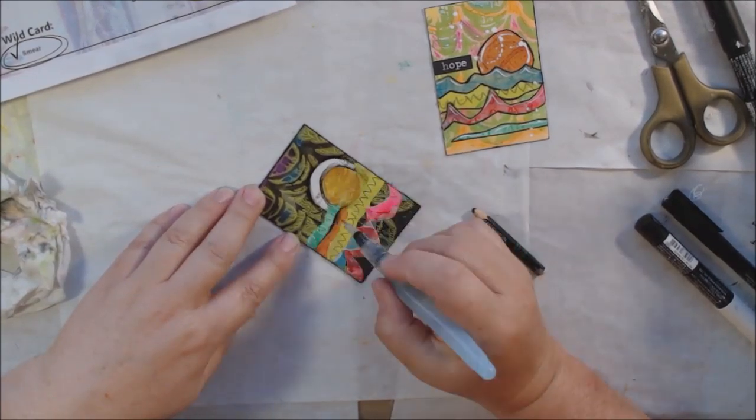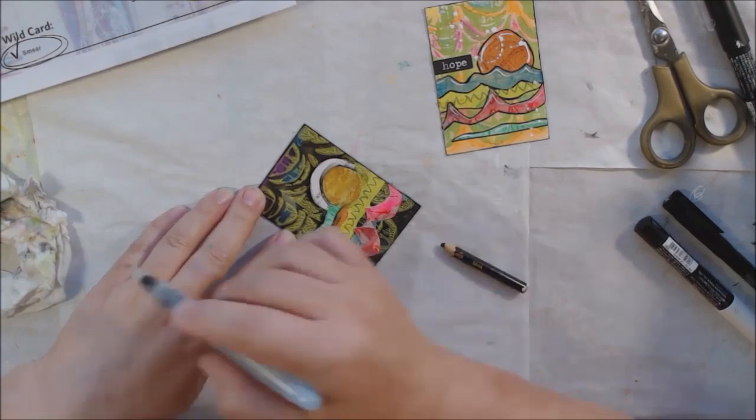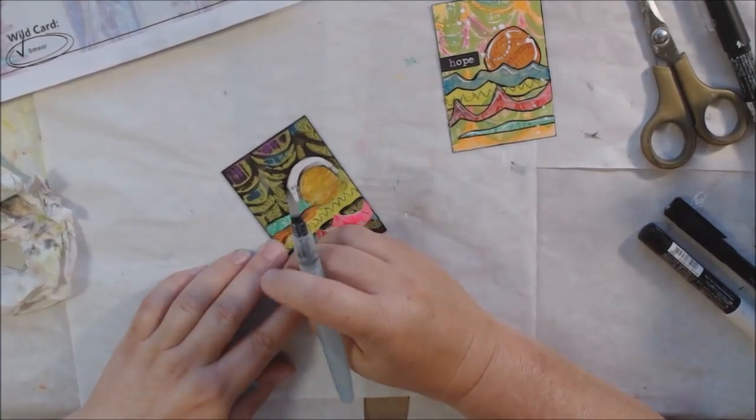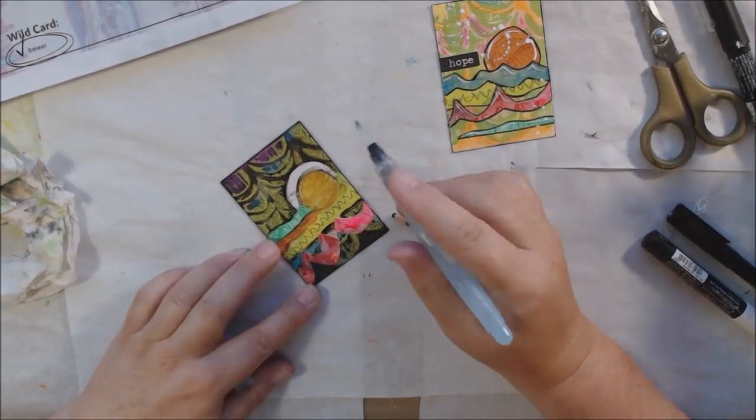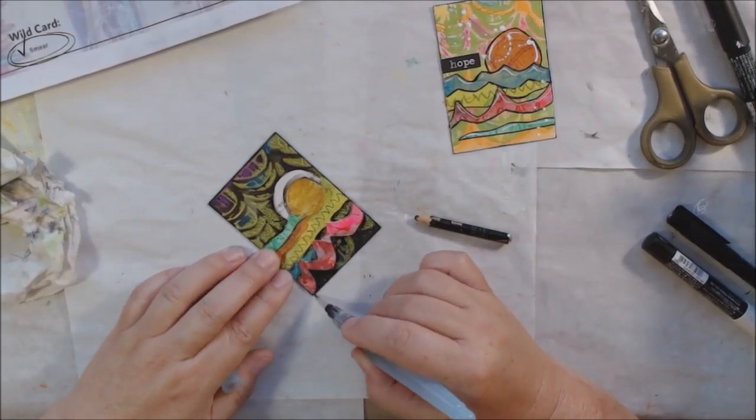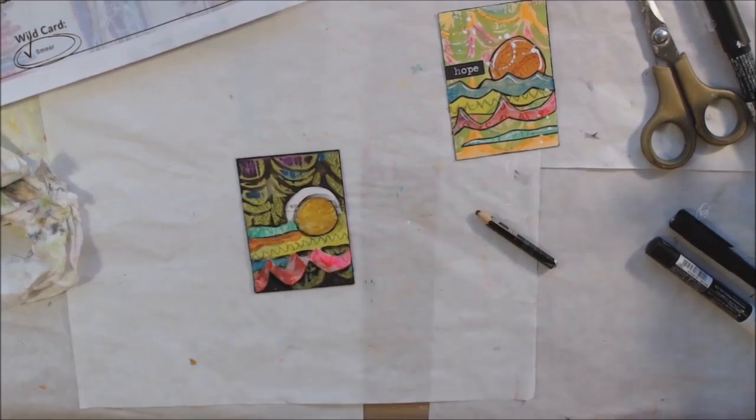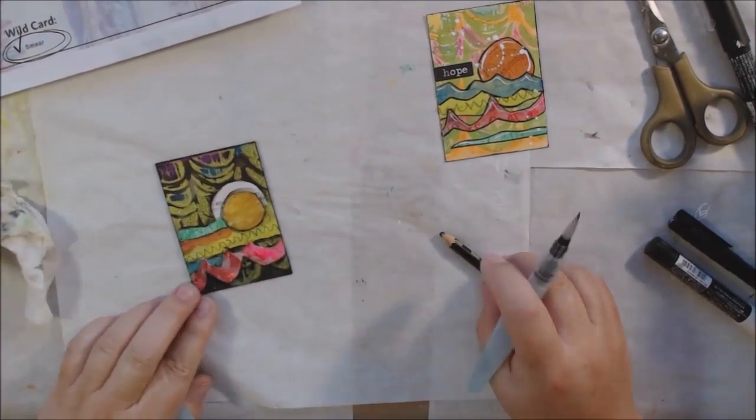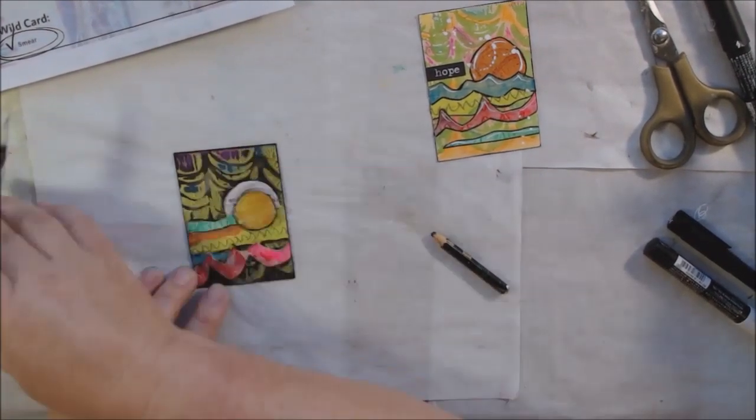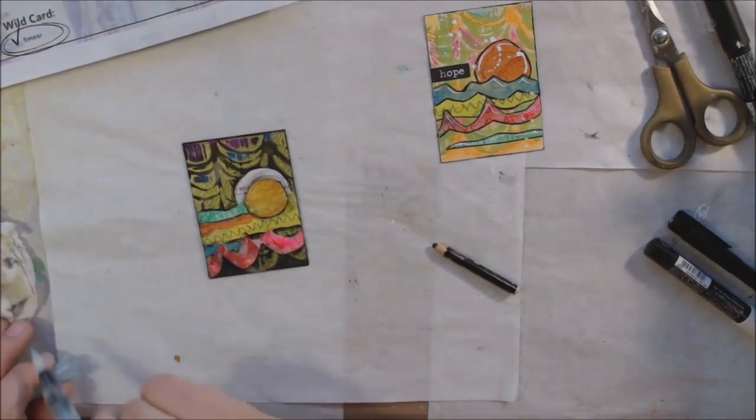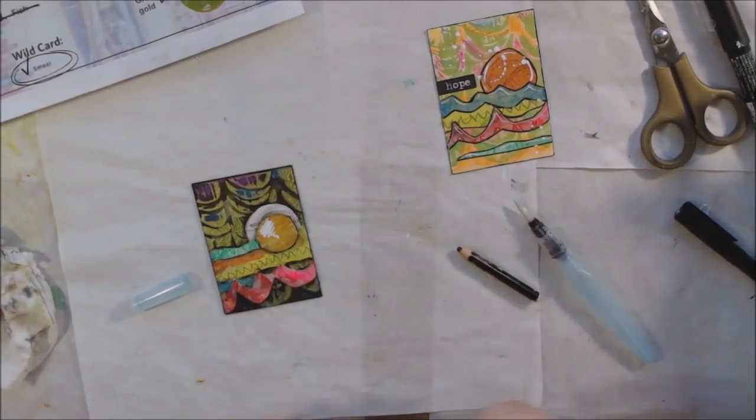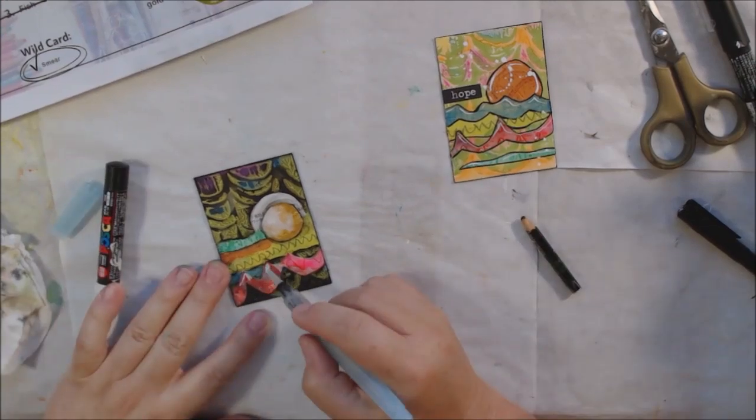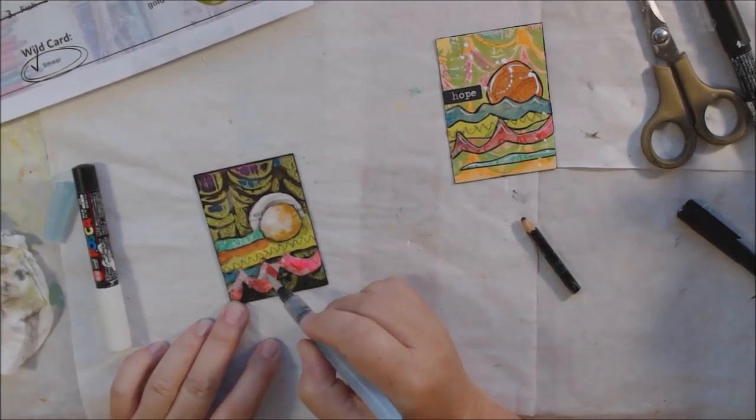I'm using my Stabilo All pencil and my water brush to make a lot more painterly and blended or faded lines around things, rather than the real sharp look that the lighter one has. It gives it a different look. I prefer the dark one myself, but someone else might like the light one better. I also added highlights with my white Posca pen but also blending out the highlight with the water brush.